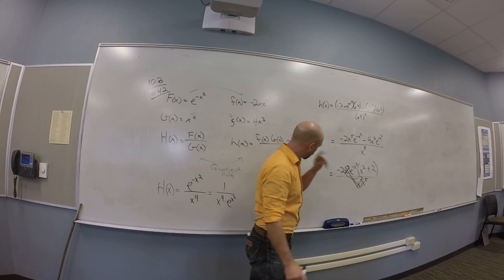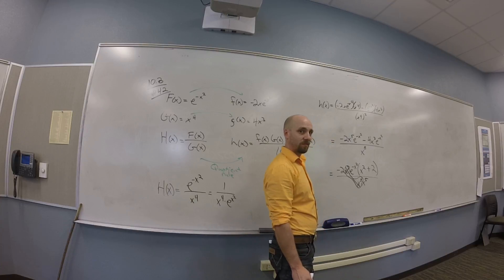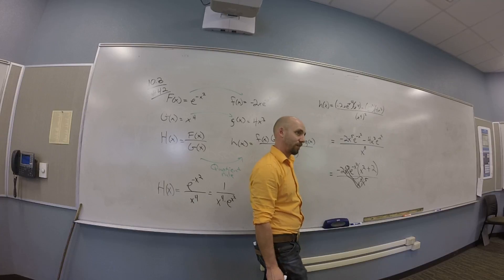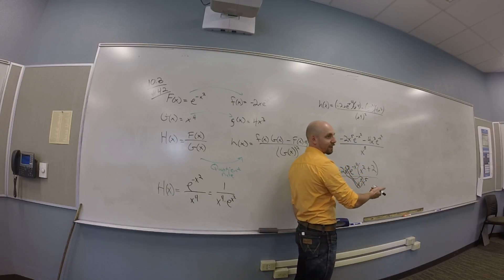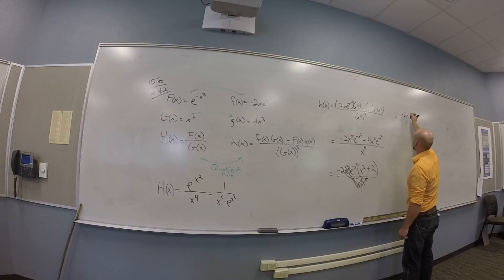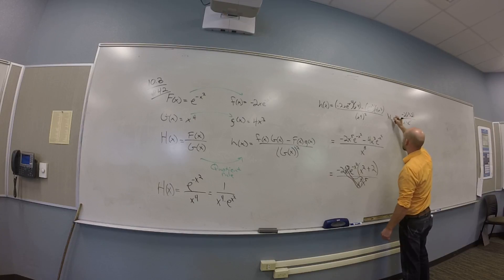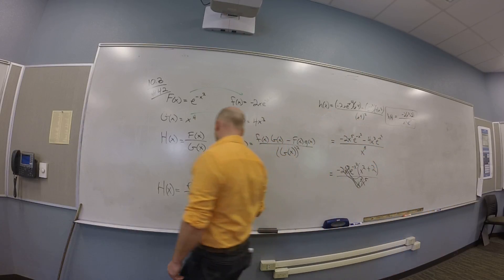And then, what else can you simplify a little bit? Well, now that the cube, you can move the negative x. Yeah, I'm not really super committed to this, but that e to the minus x squared has a negative exponent, right? So if I was in an algebra book, I would definitely want you to move that down. So maybe the best we can do here is negative 2 times x squared plus 2 over x to the 5th e to the x squared, and that's our little h. Over here is what capital H is.